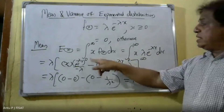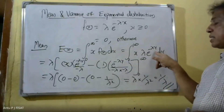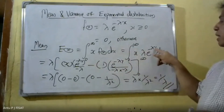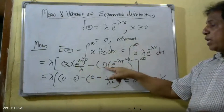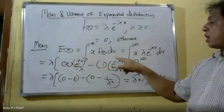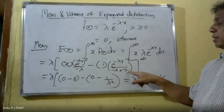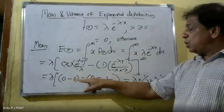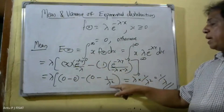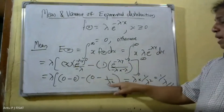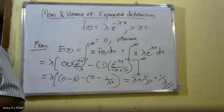To recap the integration: taking λ outside, with x as the first function and e^(−λx) as the second function, we get x·e^(−λx)/(−λ) minus the derivative of x times the integral of e^(−λx)/(−λ)·(−λ). Applying limits: upper limits give 0; lower limits give −1/λ². Therefore, λ × (1/λ²) = 1/λ. This is the mean of the exponential distribution.